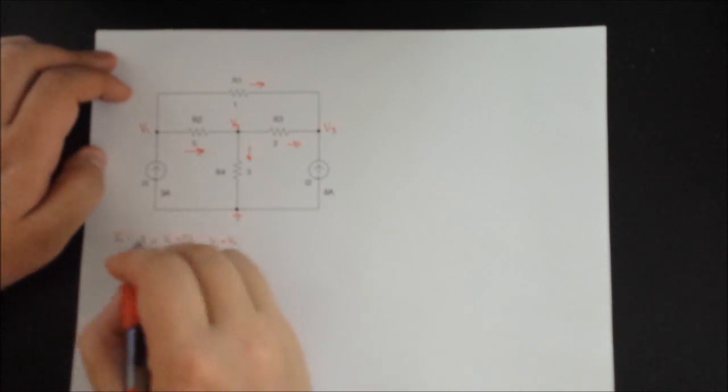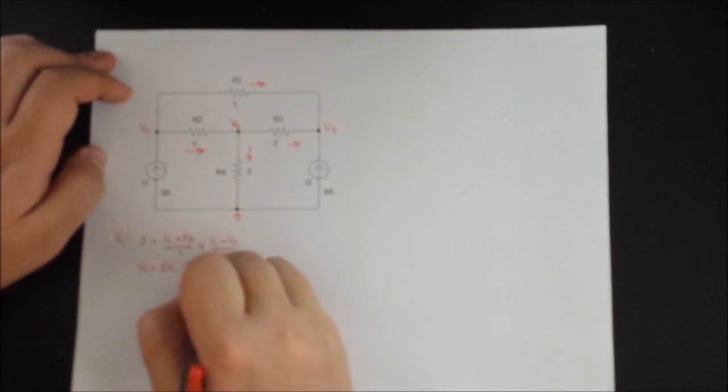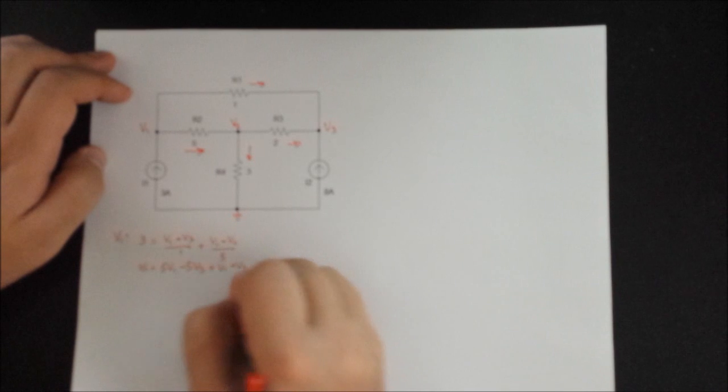So we can simplify this equation by multiplying by 5. So it's 15, it's equal to 5V1 minus 5V3 plus V1 minus V2. So that is our first equation.